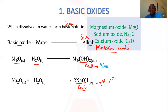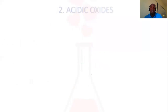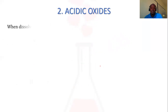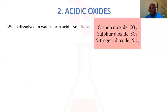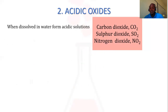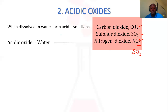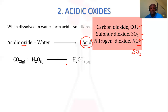So examples of basic oxides are metallic oxides, with the exception of some few oxides we shall see later on. Secondly, we have acidic oxides. These are oxides which will form acids when dissolved in water, or they will form acidic solutions. These are mainly oxides of non-metals. For example, carbon dioxide, sulfur dioxide, nitrogen dioxide — as you can see, most of them are gases. You can also have sulfur trioxide as one of the acidic oxides. When you dissolve an acidic oxide in water, you will always form an acid. That's why we call them acidic oxides.